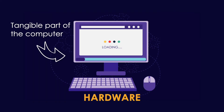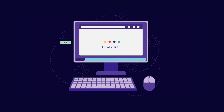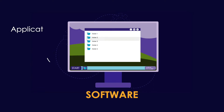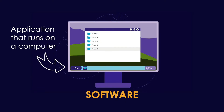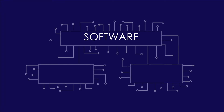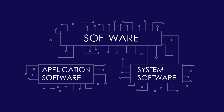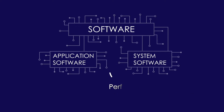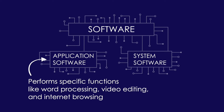Hardware is the physical or tangible part of the computer — these are the parts you can touch. Some examples are the monitor, the keyboard, and mouse. Software is also known as a program or application that runs on a computer and enables it to perform a specific task. There are two classifications of software: system and application software. System software performs all the operations the computer needs to run — a perfect example is your operating system like Windows for Microsoft and macOS for Apple. Application software performs specific functions like word processing, video editing, and internet browsing.